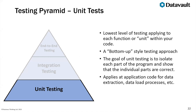Unit tests apply to the lowest level of code and data. They test each function or unit within your code — think of unit tests as a bottom-up testing approach. The goal is to isolate each part of the program and show that the individual parts are correct. We can apply this to application code for data extraction and load processes, and we can also begin to think about what would define a unit in our data warehouse or data vault.